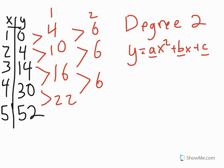Since we have three unknowns — a, b, and c — we're going to need to create three equations for this system of equations in order to determine what a, b, and c are. To do that, I'm going to use the x and y values listed on the table.